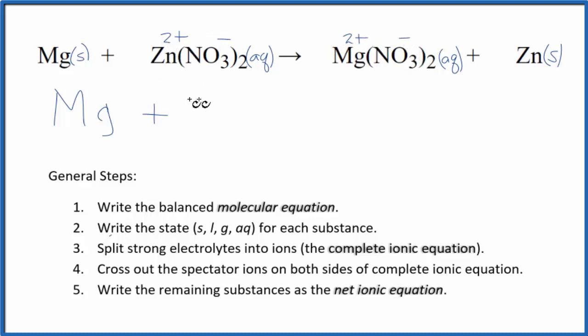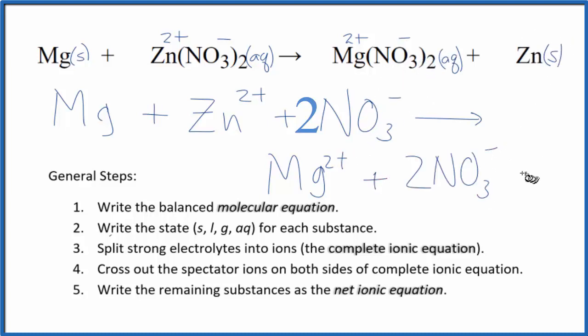So we have Zn 2 plus, and then we have these two nitrates. Those are the reactants in our complete ionic equation. On the product side, we have the Mg 2 plus, we have the 2 nitrate ions, and then we have just the zinc there.